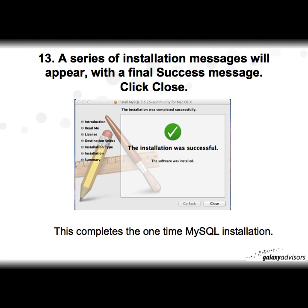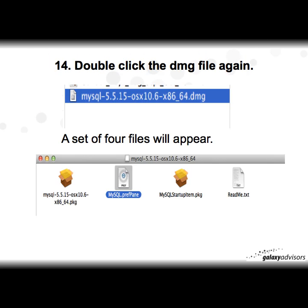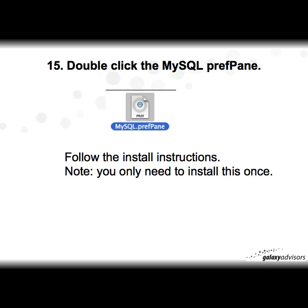After the software installs you'll get a success message in green — this completes the one-time MySQL installation. Next you need to install the MySQL Preference Pane, which enables you to start and stop the MySQL server. It's important to have MySQL running before you start. Go back and double-click the DMG file again, this time select the MySQL Preference Pane and double-click it to install.